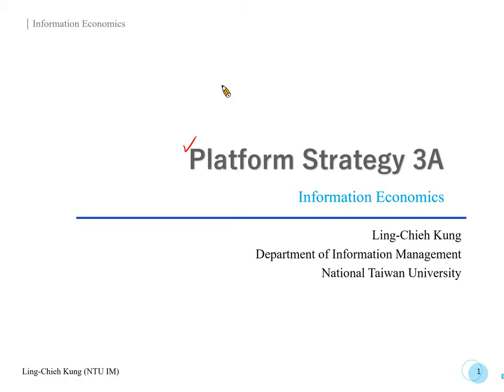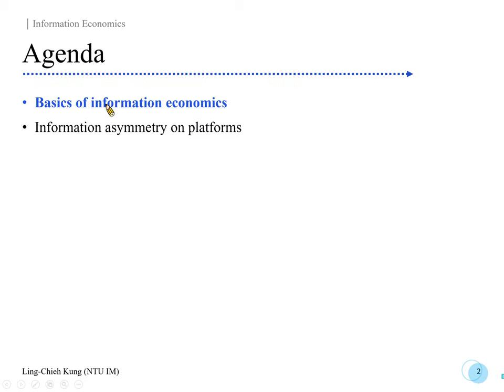Hi everyone, welcome back to Platform Strategy. This is lecture 3a. In this lecture, we want to give you an introduction to information economics. I'm going to go through two steps: first, some basic ideas about information economics — how do we categorize asymmetric information, what are their implications, and some basic ways to deal with them. Then, as this is a course regarding platform strategy, I will talk more about information asymmetry on platforms and some remedies for them.